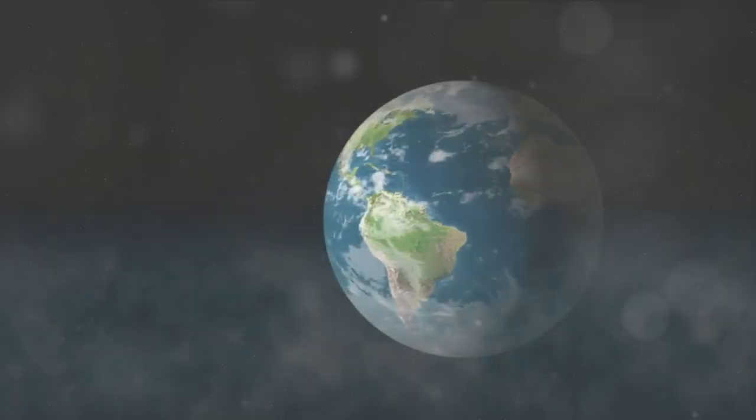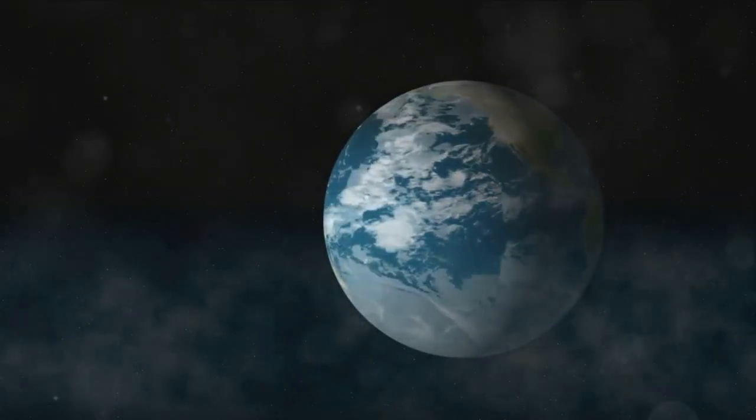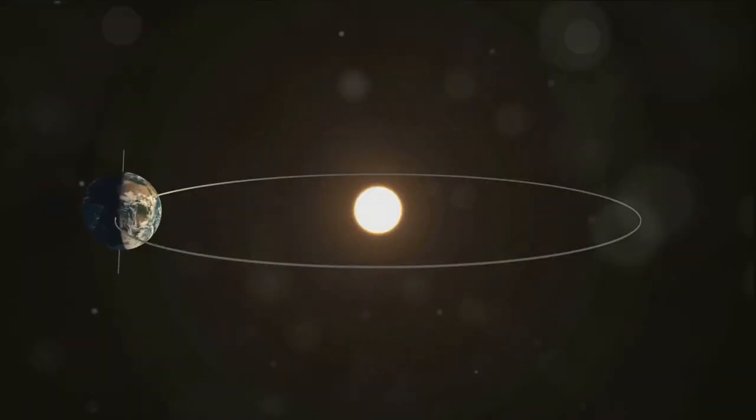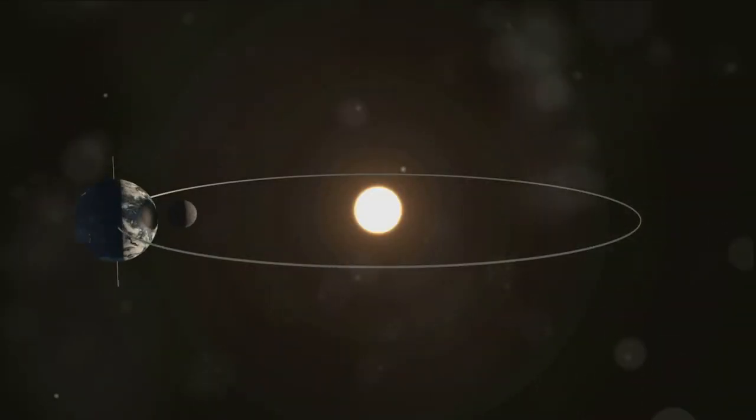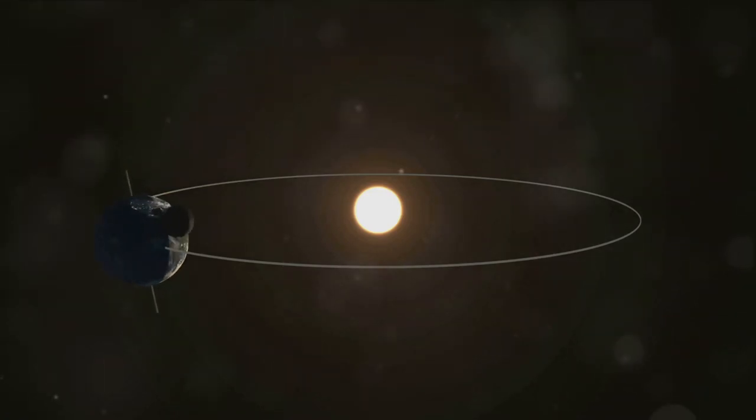Earth's tilt during orbit brings us seasons. Isn't that amazing? Just like a dancer leaning into a spin, our planet leans toward or away from the sun as it orbits. When Earth leans towards the sun, it's like a warm, sunny hug. We call this summer.